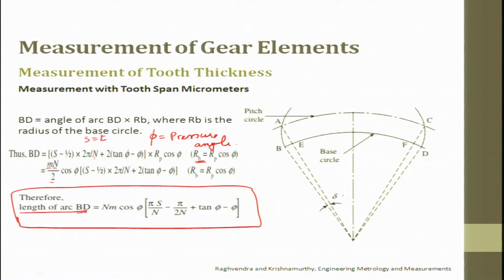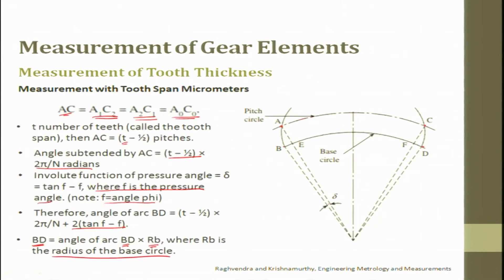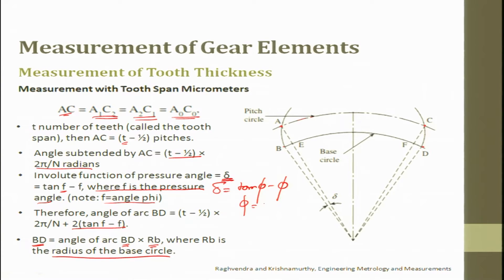Del is the involute function of the pressure angle, where φ is the pressure angle. Del equals tan φ minus φ, where φ is in radians.